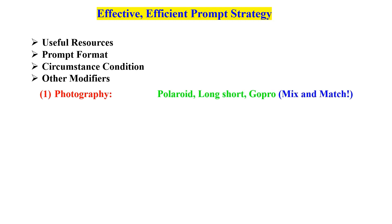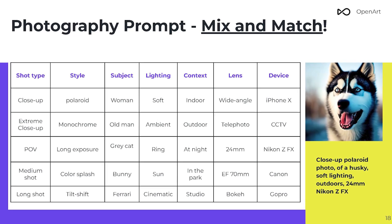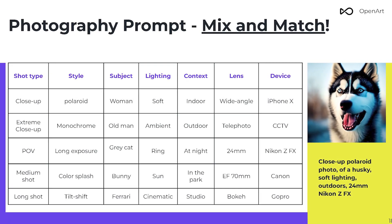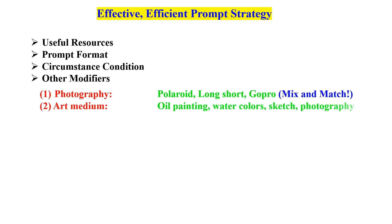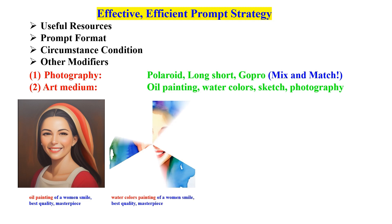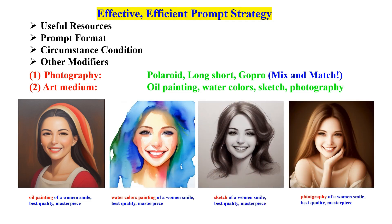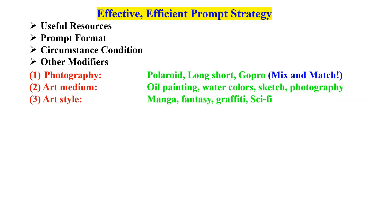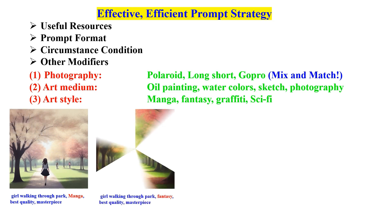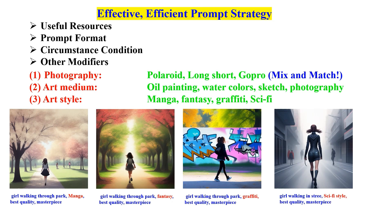Now let's talk about the modifiers. Using photographs as an example, we can use these modifiers individually or mix them up. This includes the art medium — oil painting, watercolors, sketch, photograph, etc. Art style — manga, fantasy, graffiti, sci-fi, etc.